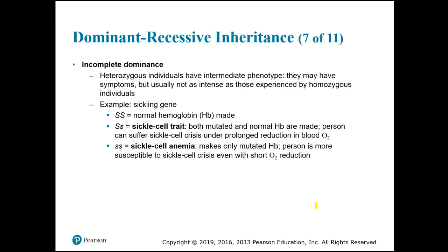Now let's talk about a different type of inheritance called incomplete dominance. This is the same as dominant recessive inheritance, except for the heterozygous individual — in that case you have a blending, or the individual will have a trait that's kind of intermediate between the other two forms. So there are really going to be three phenotypes.